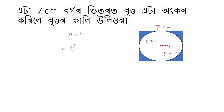Pi means 22 by 7, r means 3.5. So we calculate 22 by 7 into 3.5 into 3.5.